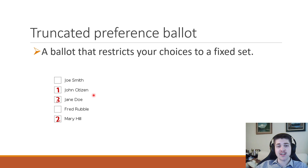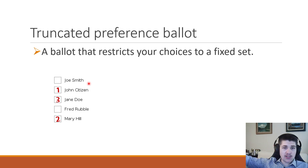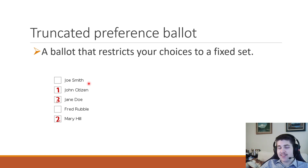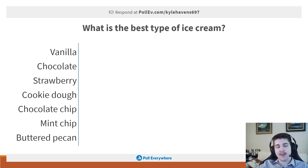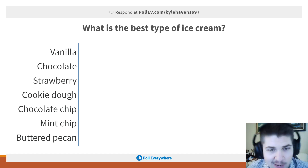A truncated ballot, or truncated preference ballot, is one where you're not given the full set of choices. For example, I could ask you to rank your top three out of five. In the United States for president, technically there's a huge number of candidates, but we're only allowed to select one and often not given the complete list. That's what truncated means. Another question I could ask is: what's the best type of ice cream? This would be a truncated ballot because I can't necessarily give you every single choice — if we're trying to determine what type of pizza to order for class, I can't list all types of pizza since there are too many.